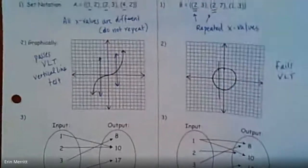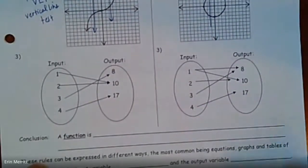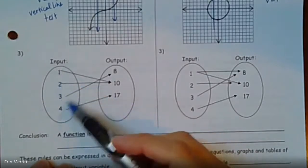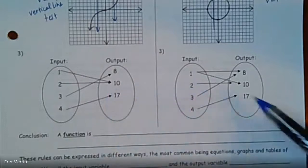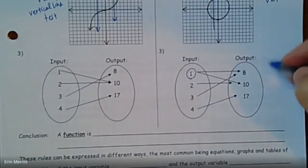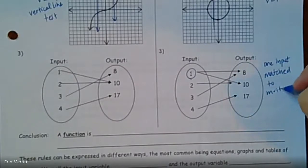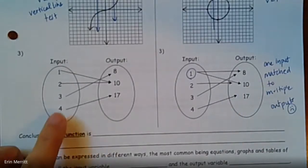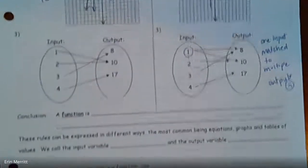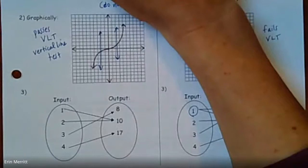The next one is given in little sets here of inputs and outputs. This set counts as a function, whereas this set over here doesn't. It kind of goes back to that first example where you have repeated x's or not. Here, every value in the input only goes to one value of the output. Whereas in the second set, the number one is matched to eight and matched to 10. And you can't have that. So you have one input matched to multiple outputs. That's a big no. Whereas here, each input only matches to one output. The fact that there's an output that's doubled, that's okay.